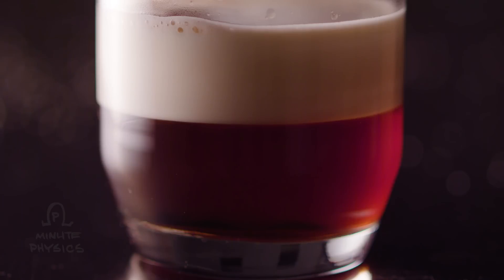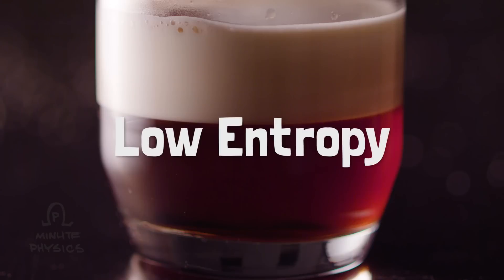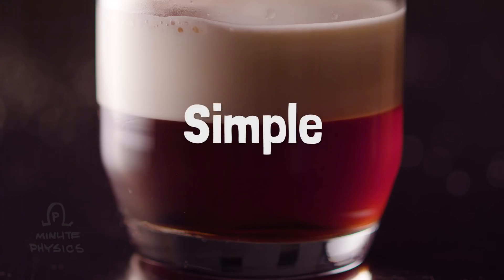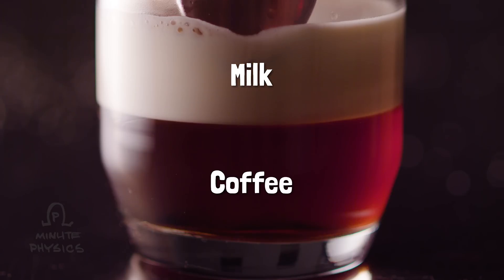For example, take a cup filled with half coffee and half milk. It starts off in a state with relatively low entropy. You could swap coffee molecules with each other, or milk molecules with each other, without changing things substantially. But if you swapped coffee molecules with milk molecules, that would be a noticeable change. It's also a simple setup. Milk on top, coffee on the bottom.